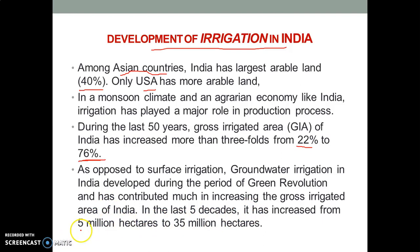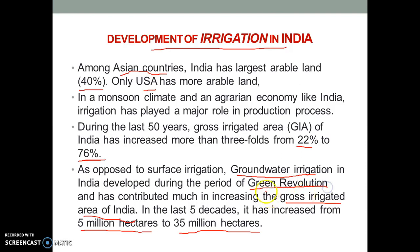Due to this, in the last five decades the gross irrigated area has increased from 5 million hectares to 35 million hectares. This happened because groundwater irrigation in India was developed during the period of the Green Revolution, and it has contributed greatly to increasing the gross irrigated area. So the development we have seen in irrigation is largely due to the Green Revolution.